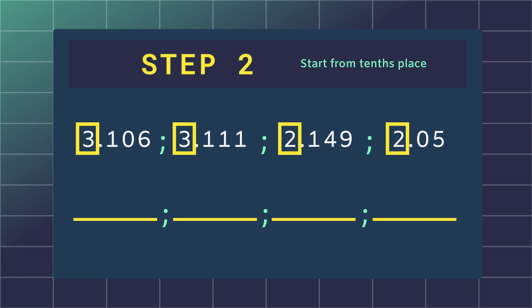Step 2. After identifying your whole numbers, start from the tenths place after the decimal point and see which number is the lowest.